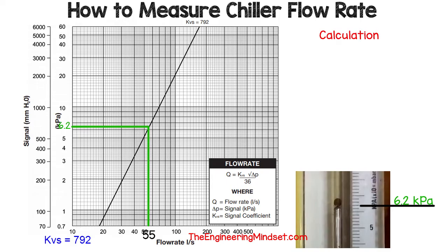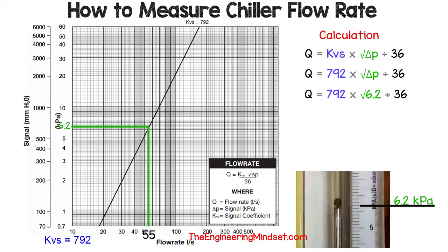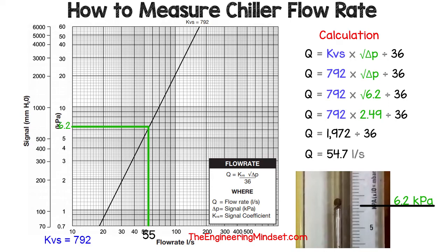For a more precise result, we can perform a calculation using the formula: flow rate Q equals the KVS value multiplied by the square root of the pressure difference, divided by 36. Substituting in our known KVS value and our pressure difference of 6.2 kilopascals, we square root that value, multiply by the KVS value, then divide by 36 to get an answer of 54.7 litres per second. And there you have it — that is the water flow rate for your chiller.